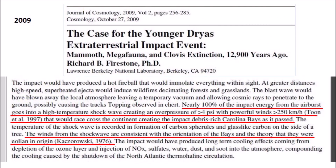Even though Firestone had made a good case for the impact origin of the Carolina Bays in his 2006 book, he reversed his position in a 2009 paper and proposed that the bays were created by powerful winds. He says: nearly 100% of the impact energy from the airburst goes into a high-temperature shockwave creating an overpressure of more than 4 pounds per square inch with powerful winds faster than 250 kilometers per hour that would race across the continent creating the impact debris-rich Carolina Bays as it passed. The winds from the shockwave are consistent with the orientation of the bays and the theory that they were eolian in origin, according to Kaczorowski in 1976.